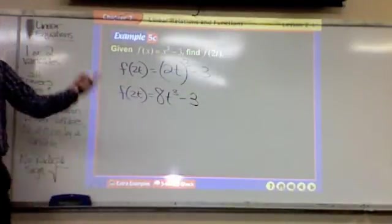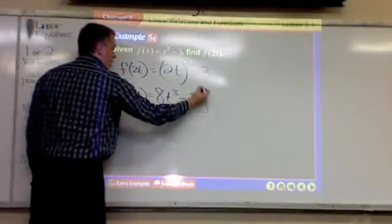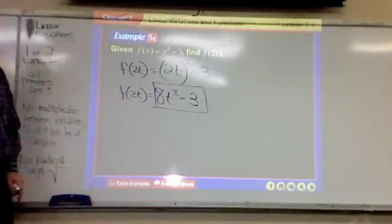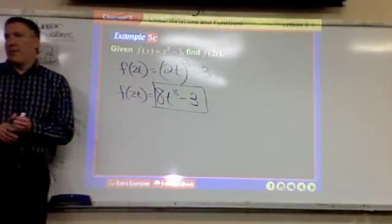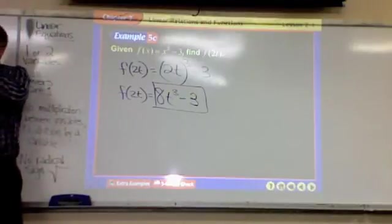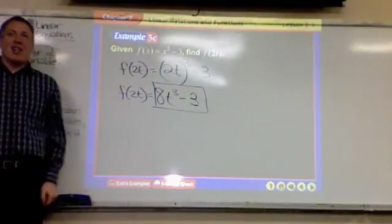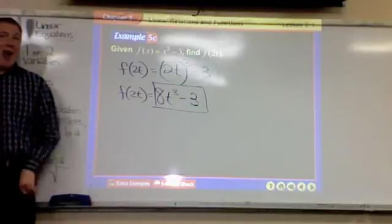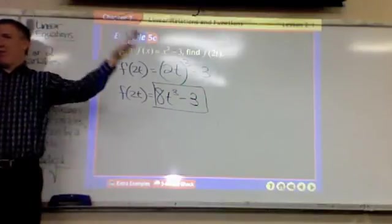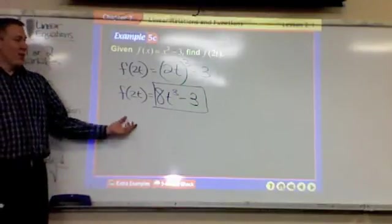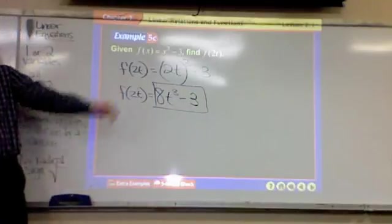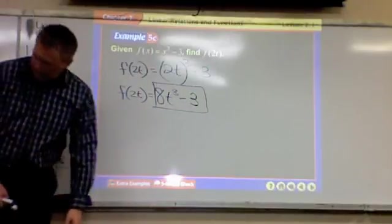Minus 3. That's your answer. That's your answer right there, this is your answer. That's it. And if I wanted to get like really technical what's my x coordinate? 2t. 2t, which is just still some variable, right? What's my y? 8t cubed minus 3. Okay?